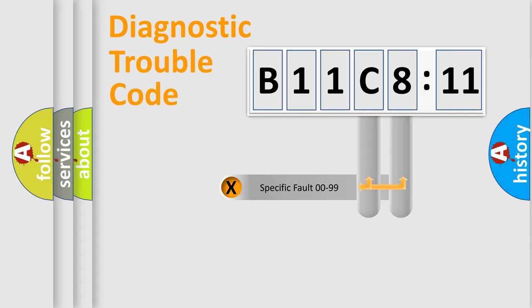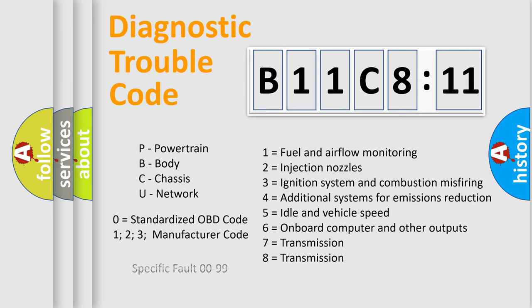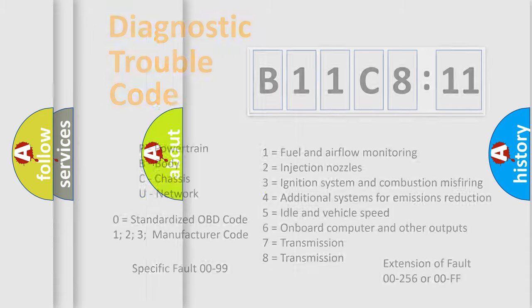Only the last two characters define the specific fault of the group. The add-on to the error code serves to specify the status in more detail, for example, a short to the ground. Let's not forget that such a division is valid only if the second character code is expressed by the number zero.